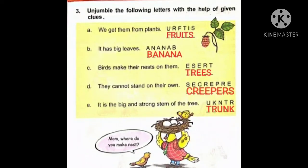Number E: It is the big and strong stem of the tree. Hamein pata hai tree ka jo stem hota hai bahut strong hota hai, aur usse hum kya kehte hai? Trunk. T-R-U-N-K. Trunk. So you have to learn all these spellings so that you can arrange the letters.